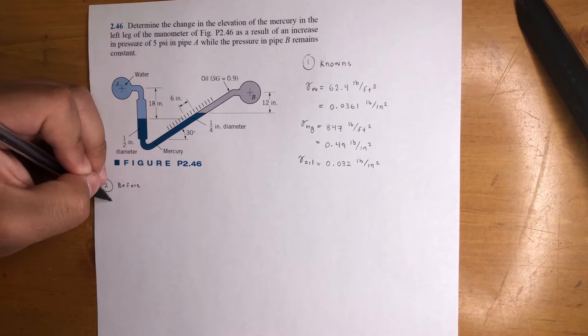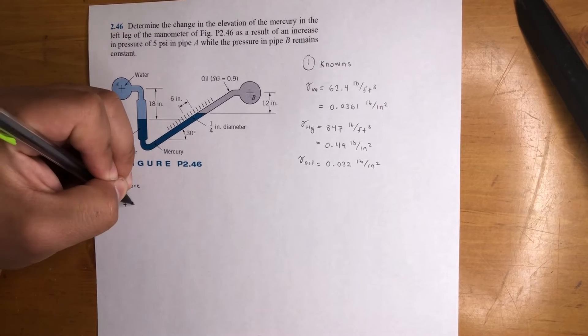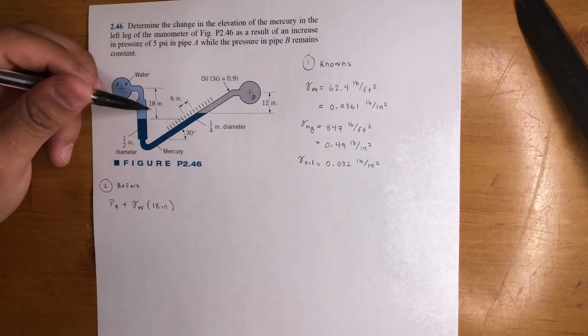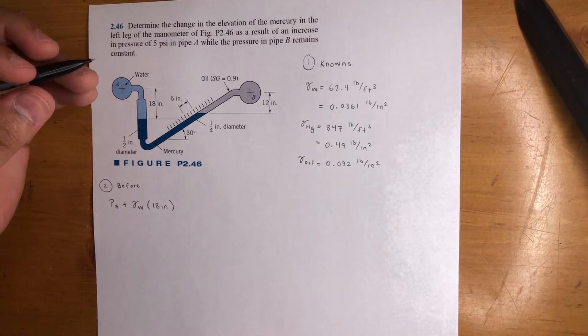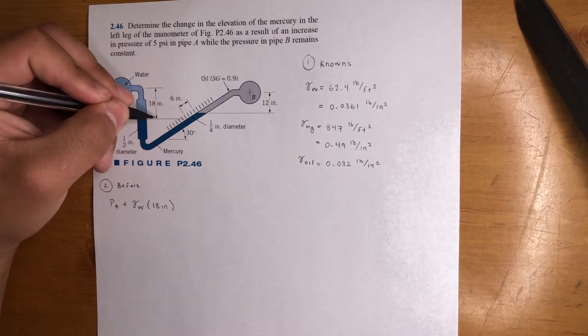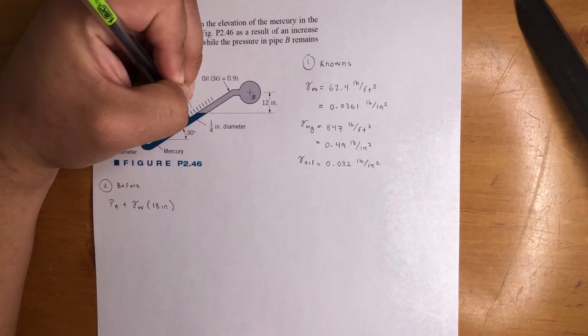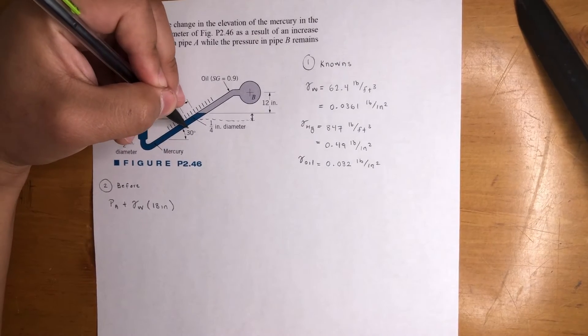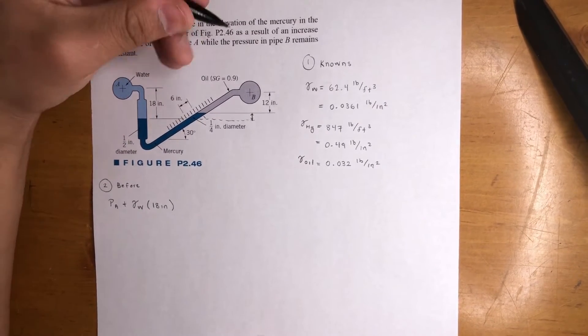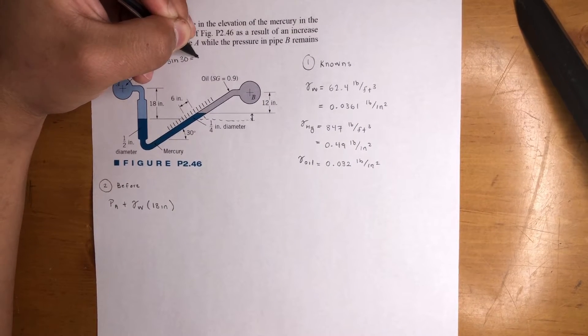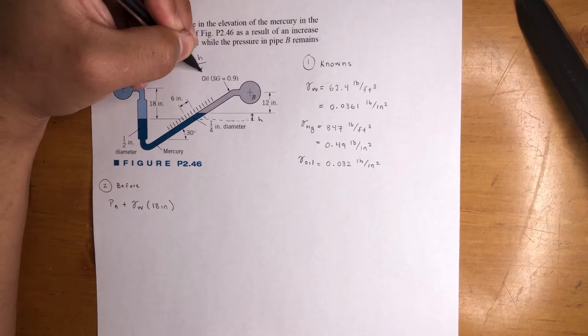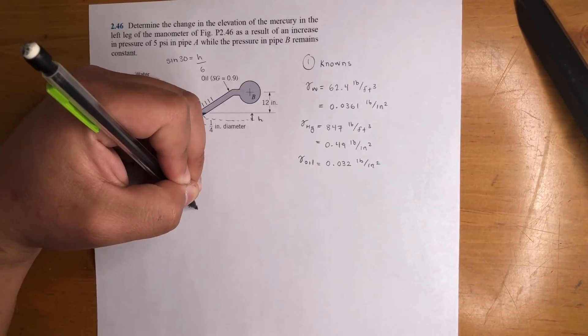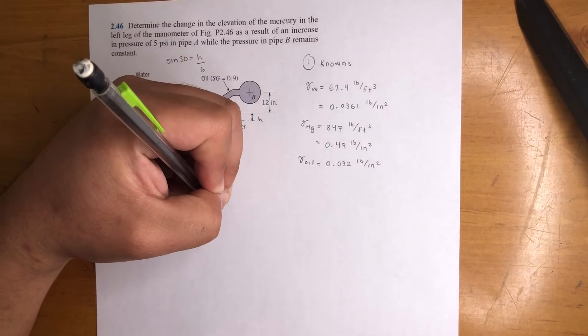We start at pressure A. We're going down, so that's positive. We're dealing with water, and that is 18 inches. This is before the pressure increase. From this point to this point, we're actually going up this little distance. This little distance right here, the angle is 30. We know the hypotenuse is 6. So sine 30 is equal to H over 6. That is 6 sine 30. It's mercury. We're going up, so minus gamma of HG times 6 sine 30.